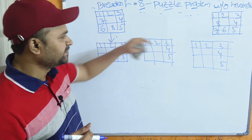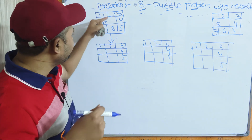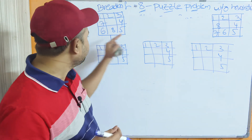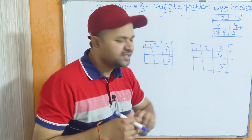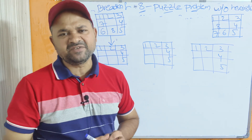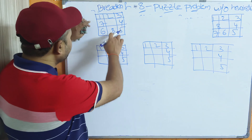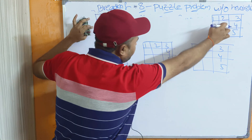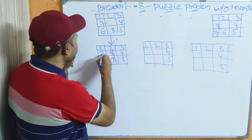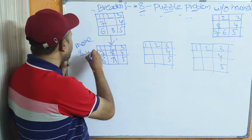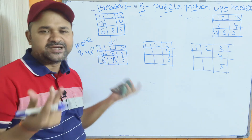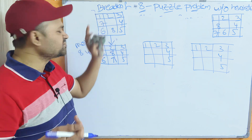Now let us see an example to demonstrate the 8-puzzle problem. This is the starting state and this is the goal state. The numbers 1, 2, 3, 4, 5 are common in both states. The difference is here we have configuration 7, 6, 8 while the goal has 8, 7, 6. First, we can move 8 towards the up — because 8 occupies this position, we place 8 here. The action is: move 8 up, or equivalently move blank space down.